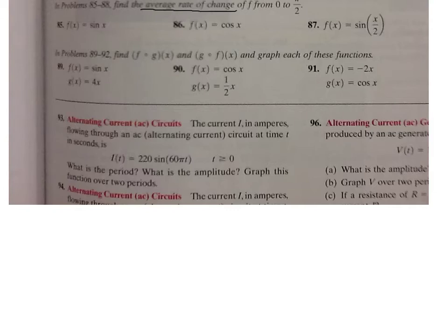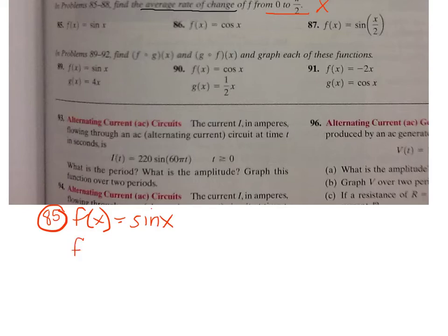Let's start with number 85. It says find the average rate of change — that just means slope — from 0 to pi over 2. Those are x-values. So for 85, the function I'm given is f(x) = sine x. They want me to find f(0), f(pi/2), and then find the slope between those two points.